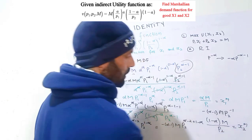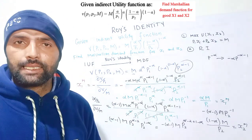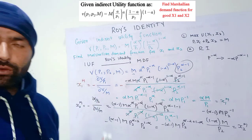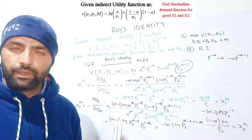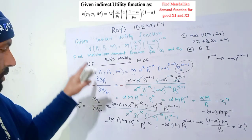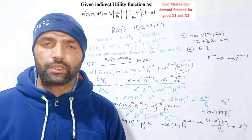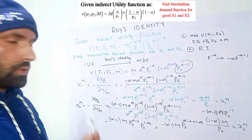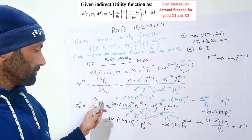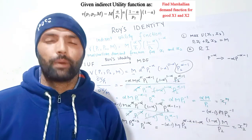This is how we apply Roy's identity to extract the Marshallian demand function from a given indirect utility function. To summarize: for x1, take -(∂V/∂p1)/(∂V/∂m) to get x1* = alpha*m/p1; for x2, take -(∂V/∂p2)/(∂V/∂m) to get x2* = (1-alpha)*m/p2. I hope this video was clear. Thank you.